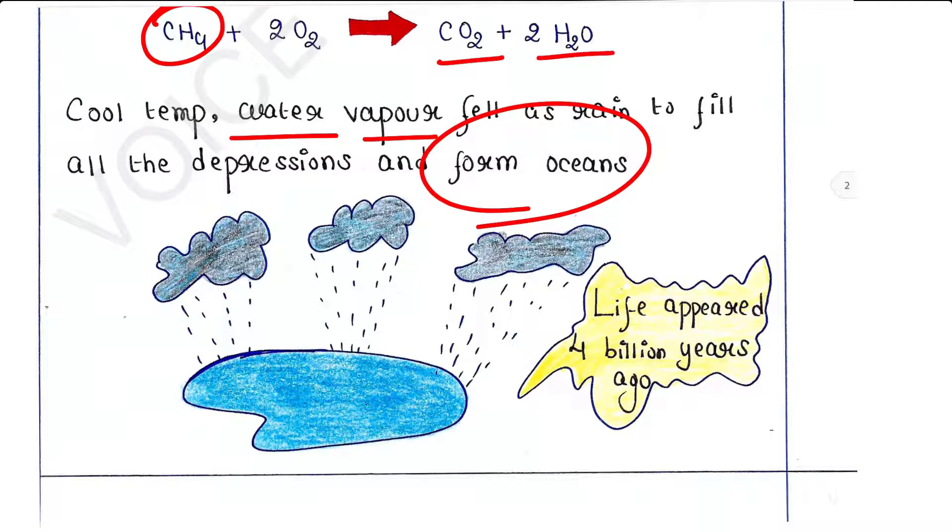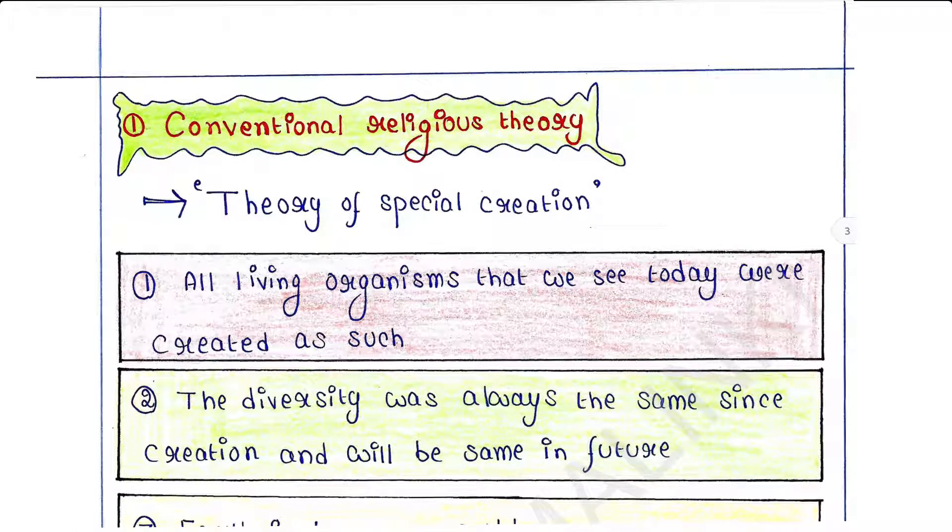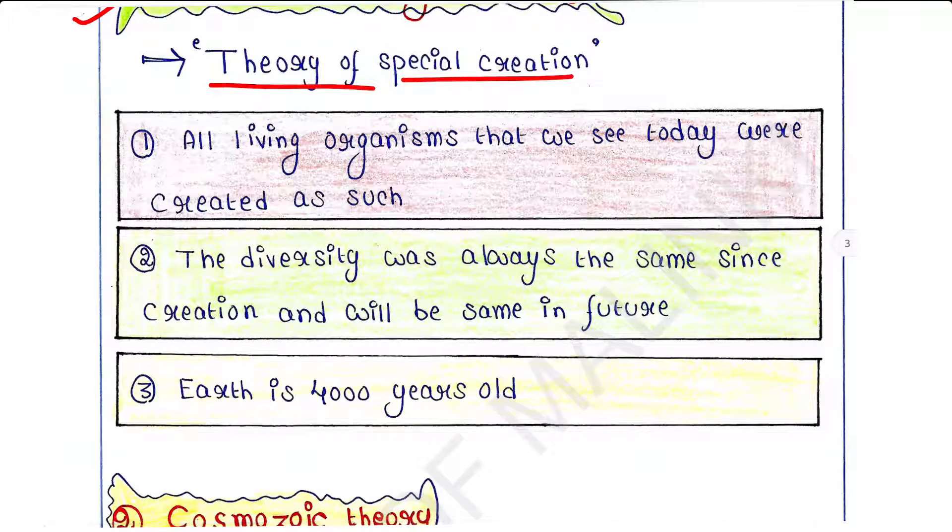Life appeared 4 billion years ago. There are some theories regarding this, and we have five theories here. The first theory is conventional religious theory, also called theory of special creation. This theory states that all living organisms that we see today were created as such, but it can't be true. We all have evolved from our ancestors.